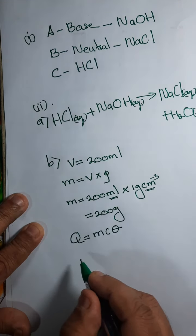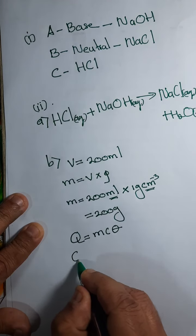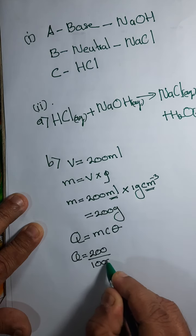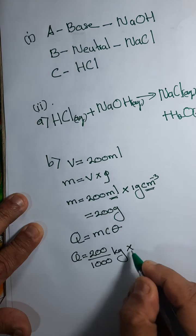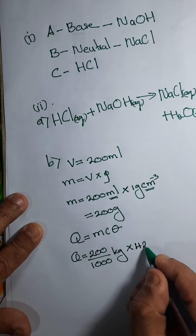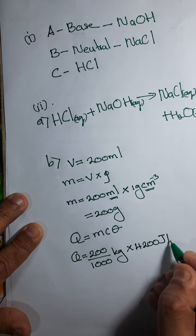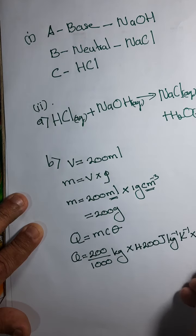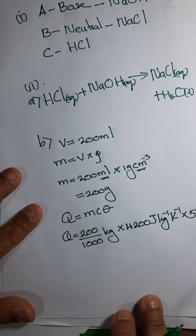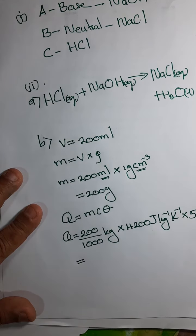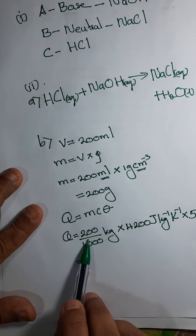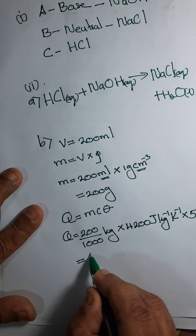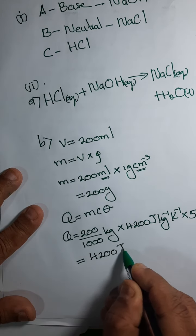In this one, q equals mass should be given in kilogram, so we divide it by thousand, that many kilogram, into specific heat capacity 4200 joules per kilogram per kelvin, into five kelvin. Five degrees Celsius increase means five kelvin increase. When you solve out this, this is going to be 0.2 into five is one, then it's automatically 4200 joules will come as the answer. So we have found the q value as answer for the B.